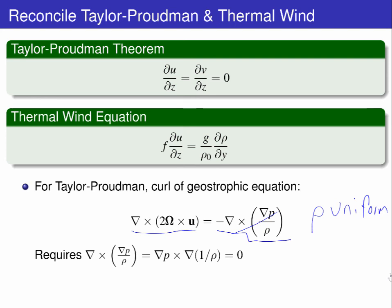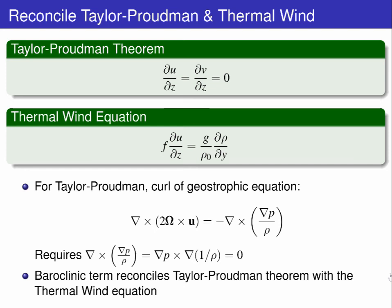we allow the density field to vary, meaning the right-hand side is no longer zero. It becomes grad P cross grad 1 on rho. This term is called the baroclinic term and it reconciles the two concepts we have just derived.